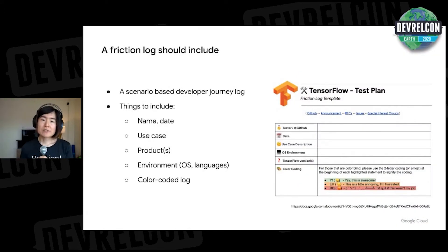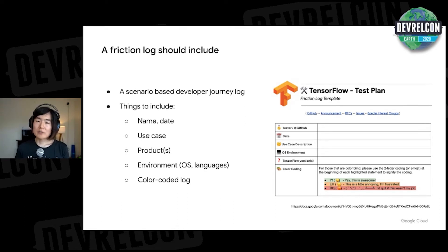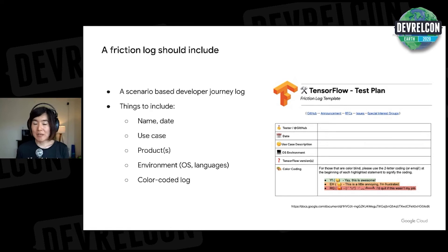So this is what a FrictionLog would look like. This is the real FrictionLog that TensorFlow would use for their friction logging. It includes the tester's name, date, and the use case — like what am I doing with TensorFlow? And which product — if you have multiple products, for example if you are talking about a cloud platform, you'd want to include products that you used. And you might want to include some other context, such as environment, which OS you used, which programming language you're using, versions of libraries, etc.